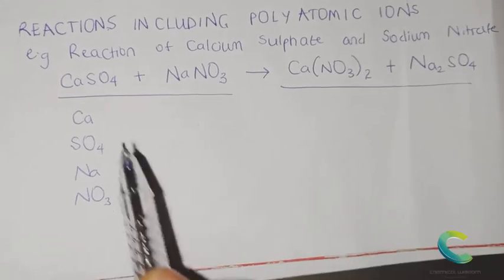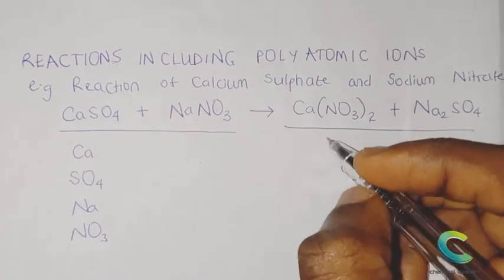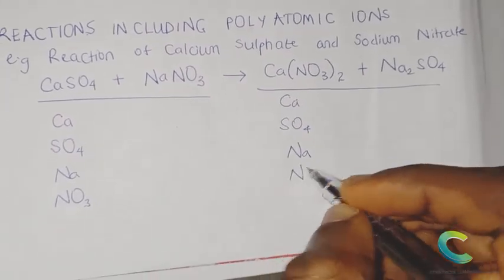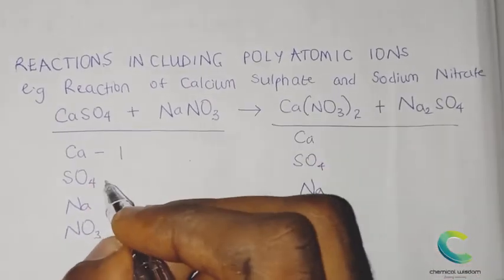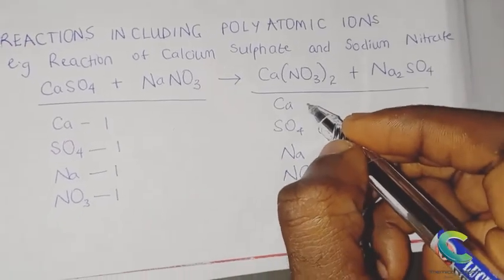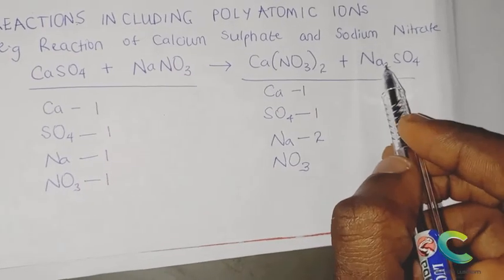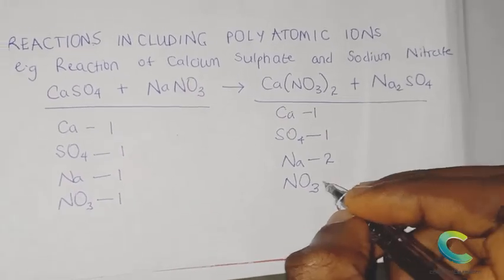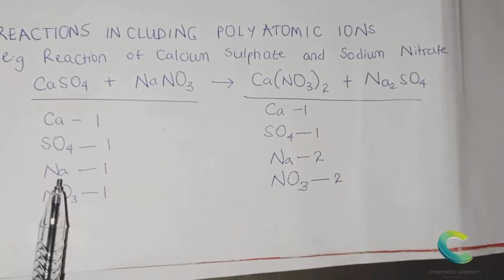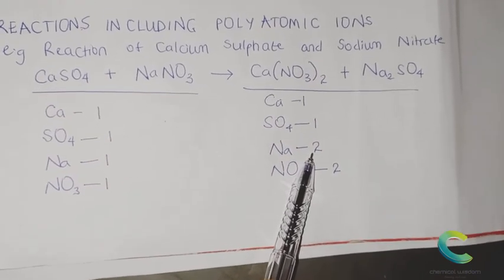For example, sulfate contains sulfur and oxygen but we write it as one ion. Step one: list out the atoms on both sides. On the left we have calcium, sulfate, sodium, and nitrate. On the right we also have calcium, sulfate, sodium, and nitrate. Step two: compare both sides. On the left we have one calcium, one sulfate, one sodium, and one nitrate. On the right we have one calcium, one sulfate, two sodium atoms (due to the subscript), and two nitrate polyatoms.